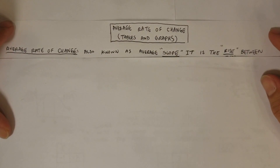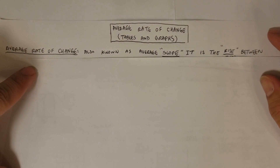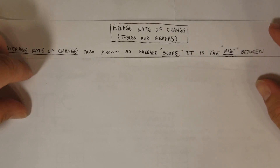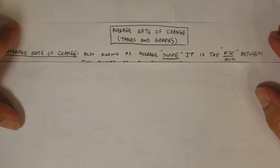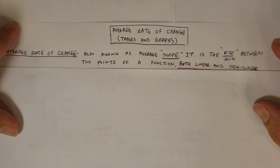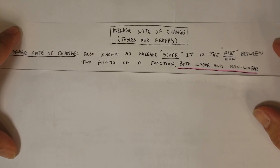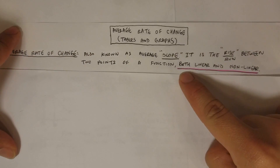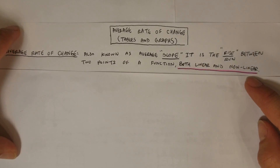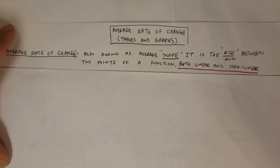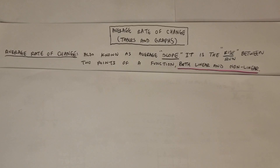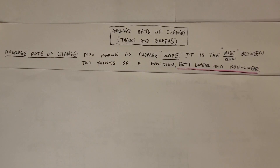Average rate of change, or average slope — this is a fancy way of saying slope. They're actually telling you to find the slope for tables and graphs. Average rate of change is also known as the average slope. Slope is rise over run, and this applies to the slope between two points of a function, both linear and non-linear. You can actually find the average slope not only for a line, but for any curve or any graph that they give you.